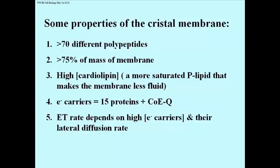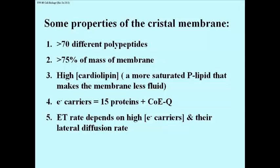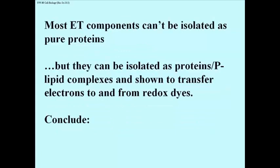The electron carriers themselves comprise 15 proteins as well as a non-protein organic molecule, coenzyme Q. The electron transport proteins are not organized in any particular order on the membrane, so the rate of electron transport really depends on the concentration of reduced electron carriers, the number of these electron transport proteins, and the rate at which these proteins diffuse laterally in the cristae membrane. When isolated from the cristae membrane, most cristae membrane proteins lose any biological activity they might have had.